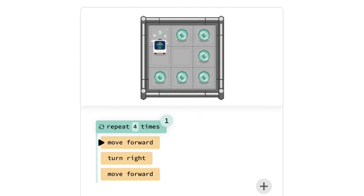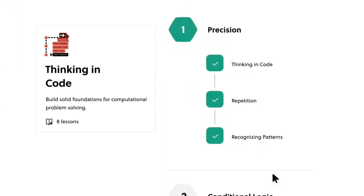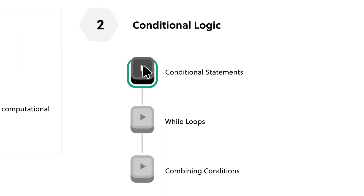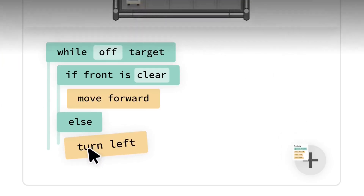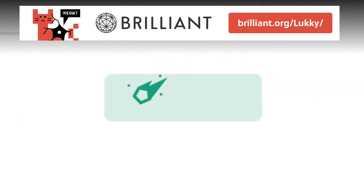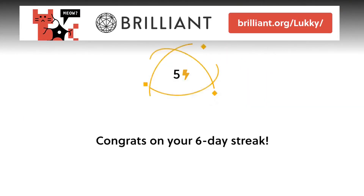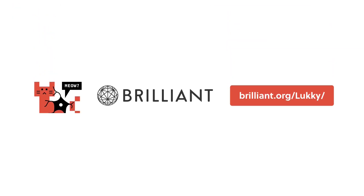So you can learn whenever and wherever. If you're interested in Brilliant, you can try it for free for a full 30 days by visiting brilliant.org/lucky or clicking the link in my description. The first 200 people that sign up using my link will get 20% off an annual plan. That's brilliant.org/lucky.